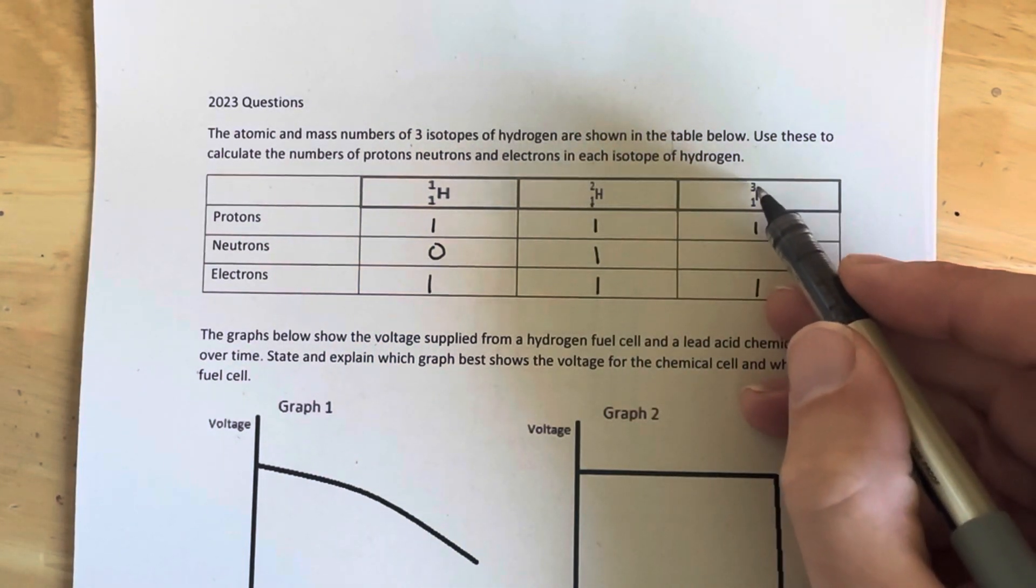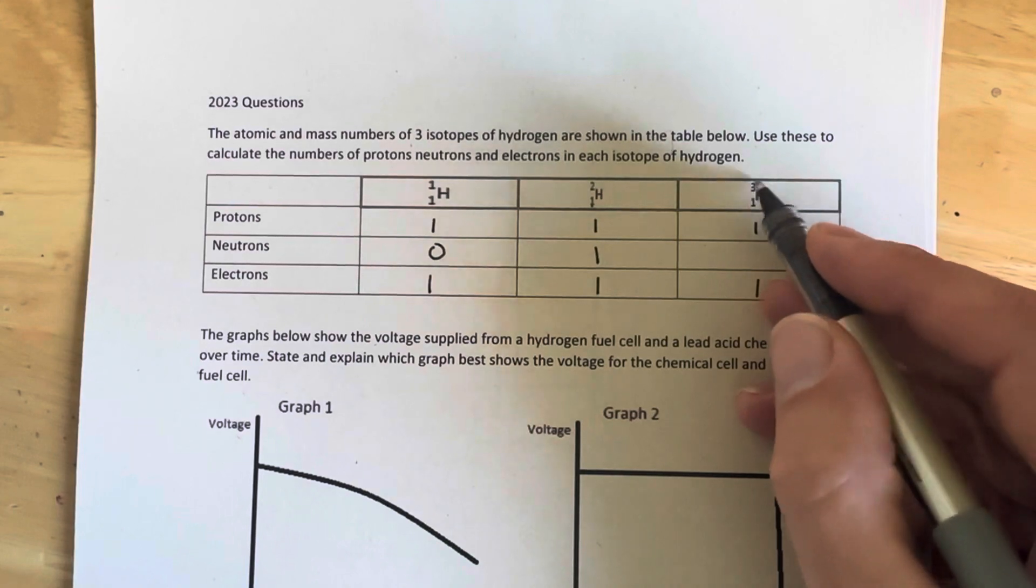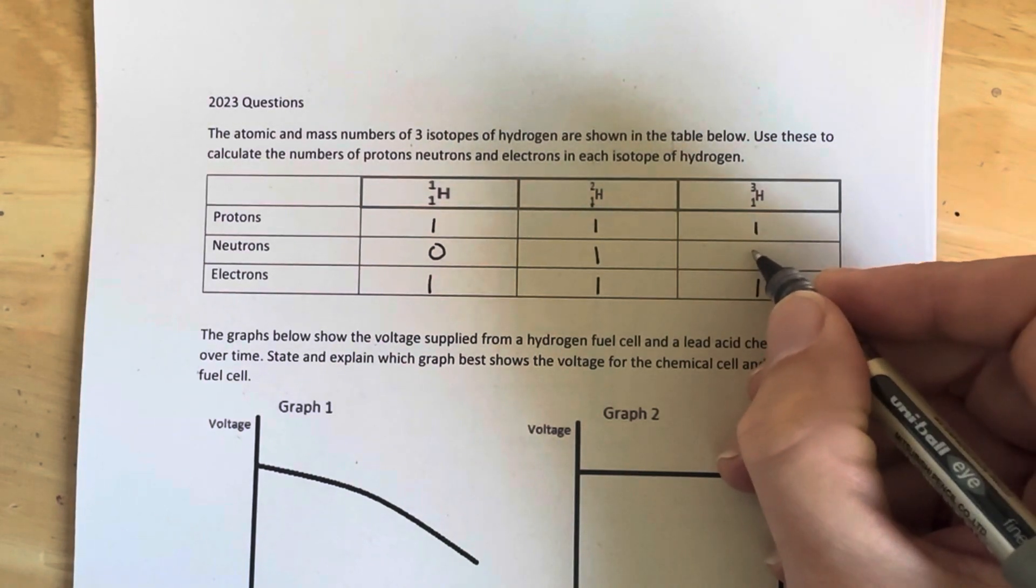This isotope here has got a mass number of three. So there's one proton, so there must be two neutrons. One proton and two neutrons gives a mass number of three. So three minus one is two.